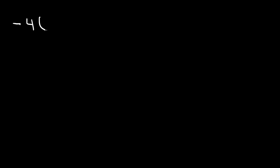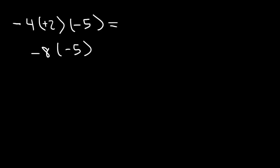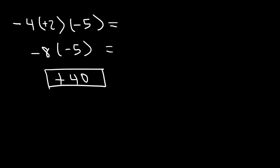Sometimes you may need to multiply 3 integers. What is negative 4 times positive 2 times negative 5? Let's go in order. Negative 4 times positive 2: a negative times a positive is negative, so that's negative 8. Now we multiply negative 8 times negative 5. Two negative numbers multiplied give a positive number. 8 times 5 is 40, so negative 8 times negative 5 is positive 40.